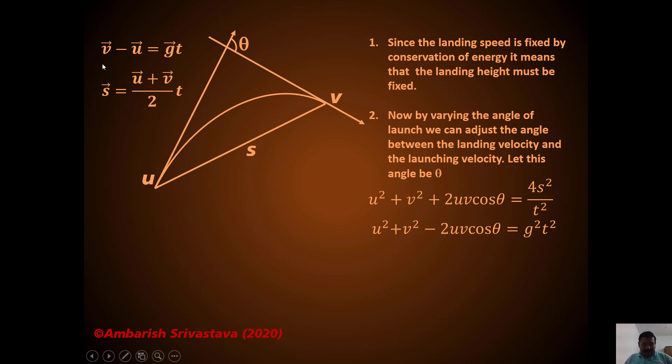So U² + V² + 2UV cos θ is 4S²/t². And then from the first equation, this is the vector difference. So you can say that U² + V² - 2UV cos θ is the square of the RHS, that is G²t². Now look at this form and many of you will now instinctively be thinking how to proceed further. Here there is 1/t² and here there is a t². And this is U² + V² + 2UV cos θ and U² + V² - 2UV cos θ. So automatically, instinctively, what gets to your mind?